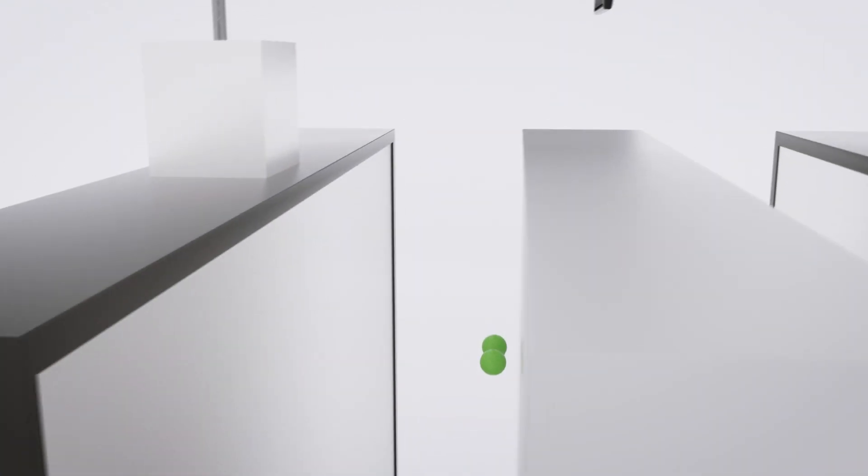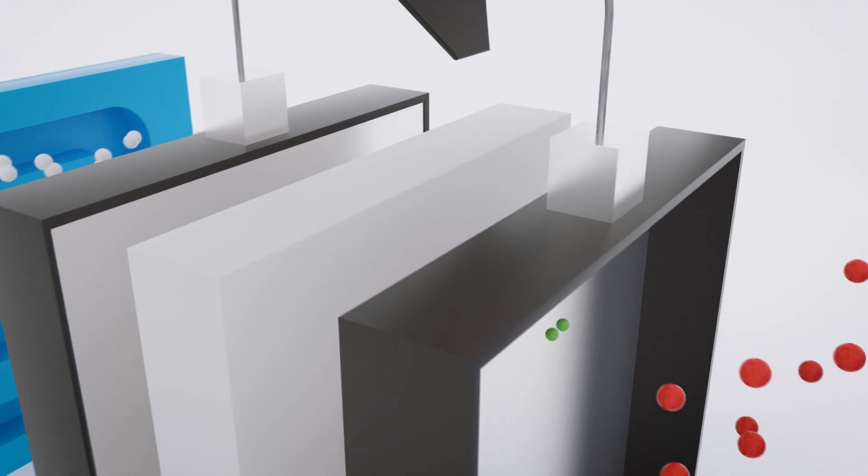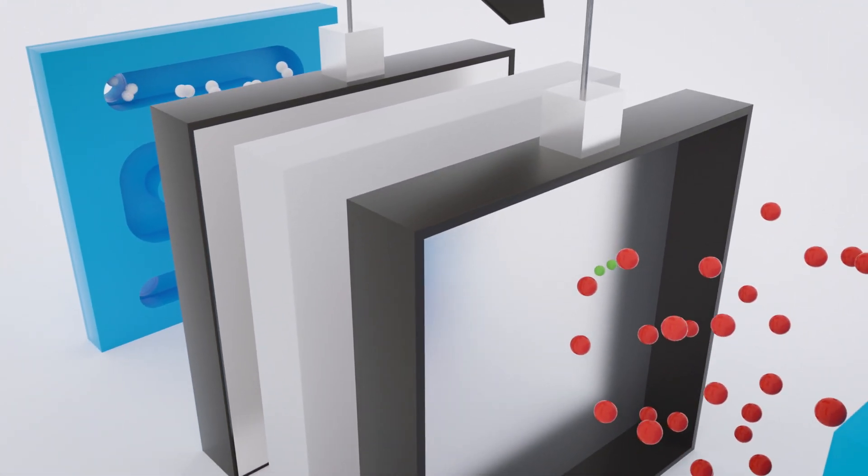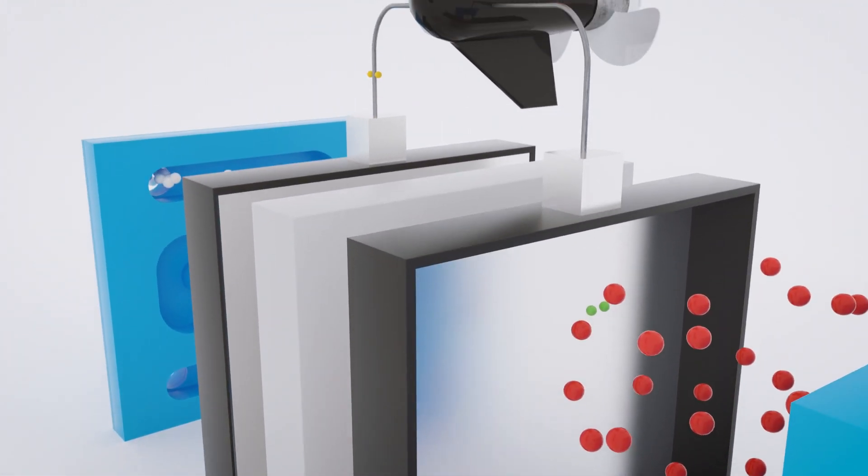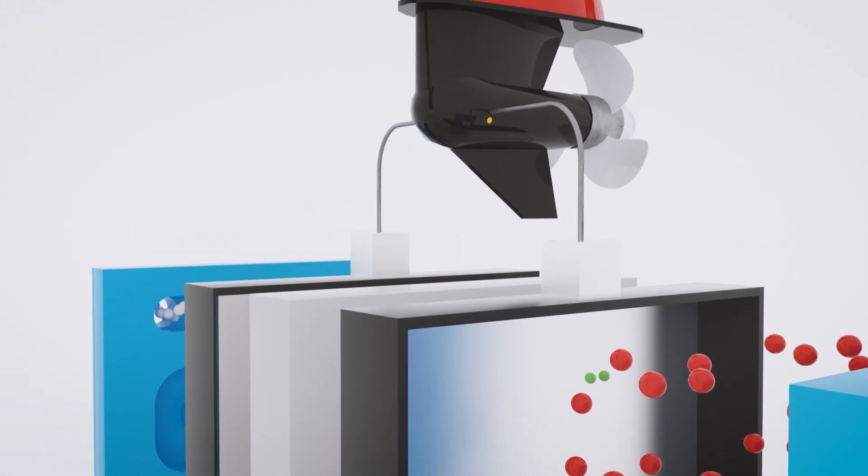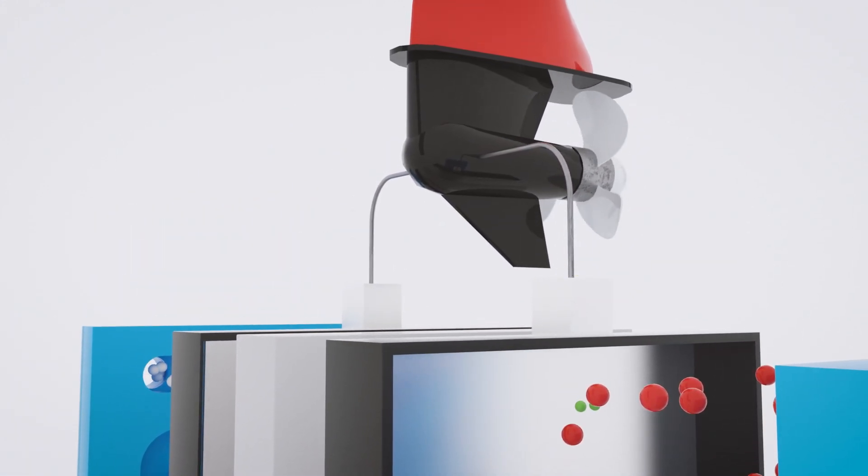The membrane allows the positively charged hydrogen to pass through, forcing the negative electrons along an external circuit. The movement around the circuit creates an electrical current and heat.